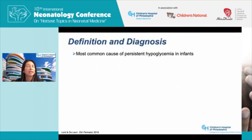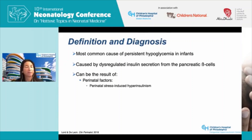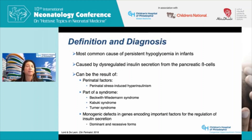Hyperinsulinism is the most common cause of persistent hypoglycemia in neonates, infants, and children, and is caused by dysregulated insulin secretion from the pancreatic beta cells. It can result from perinatal factors — perinatal stress-induced hyperinsulinism is the most common form in the neonatal population. It can also be part of a syndrome such as Beckwith-Wiedemann, Kabuki, or Turner syndrome, or result from monogenic defects in genes encoding regulators of insulin secretion, with dominant and recessive forms of congenital hyperinsulinism.